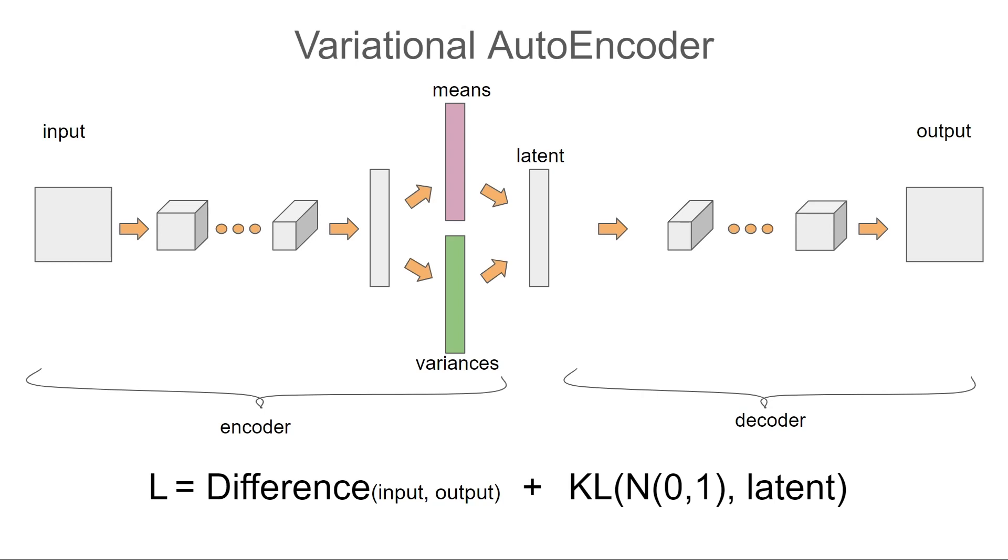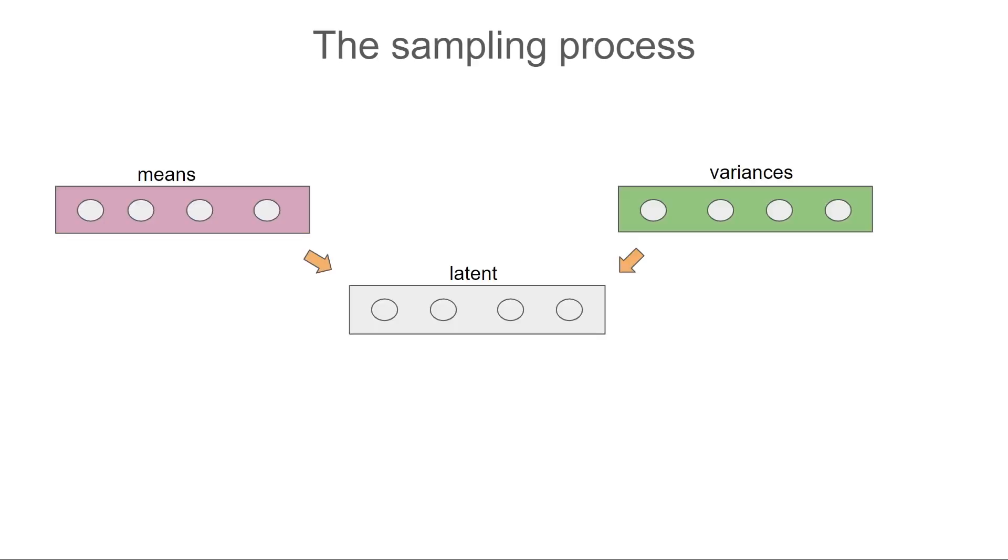Let's see now exactly how the latent vector is generated. Let's assume the first value in the means vector is 3 and the first in the variance vector is 0.5. This means the first value in the latent vector will be randomly sampled from a normal distribution with mean zero and variance 0.5. You go through the same process for each of the values in the latent vector.